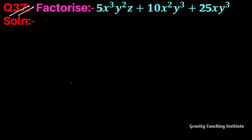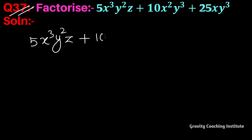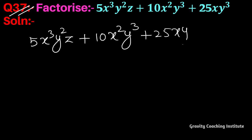Question number 37: factorize 5x²y²z + 10x²y³ + 25xy³. तो इन तीनों टर्म में हमें सबसे पहले देखना है।